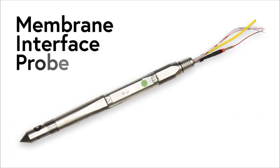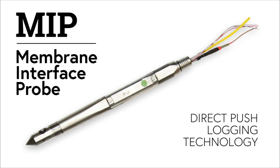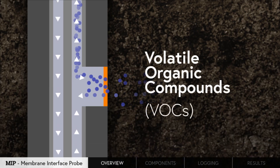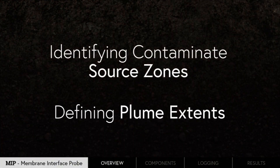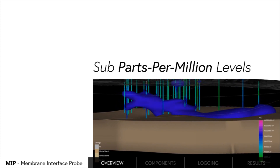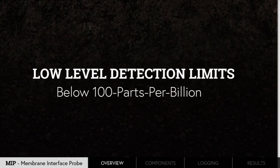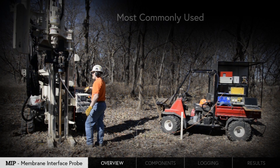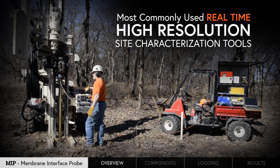The Membrane Interface Probe, or MIP, is a direct push logging technology from Geoprobe that is used to locate volatile organic compounds in unconsolidated formations. This includes identifying contaminant source zones as well as defining plume extents down to sub parts per million levels. In a special low-level configuration, MIP detection limits can drop to levels below 100 parts per billion. MIP is one of the most commonly used real-time high-resolution site characterization tools in use today.